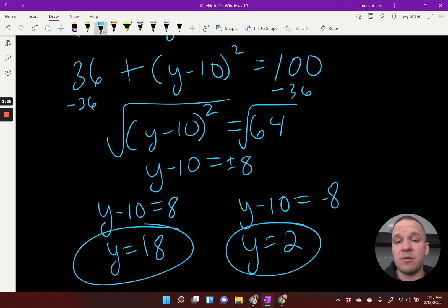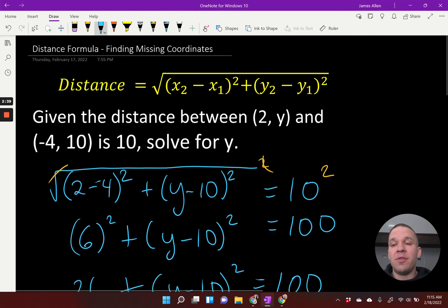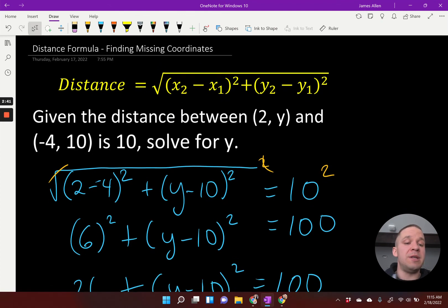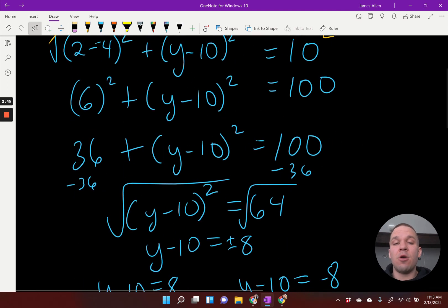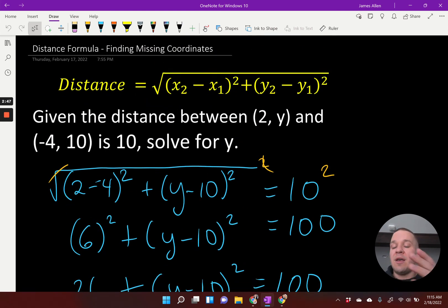I am going to get two answers here, and both these answers are going to work. Keep in mind, this is on an x, y coordinate plane. I could have positive numbers, I could have negative numbers. We're not talking about distance here. We're talking about coordinates. So there's two possible locations where the distance between these two points would be 10. So it could be (2, 18) or (2, 2), and that would still be 10 away from (-4, 10).